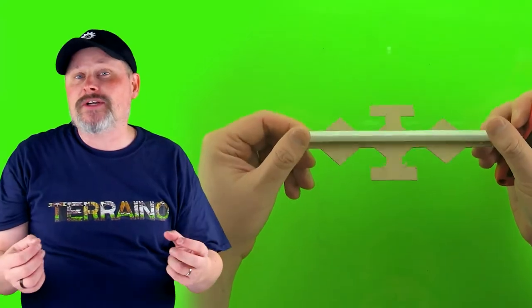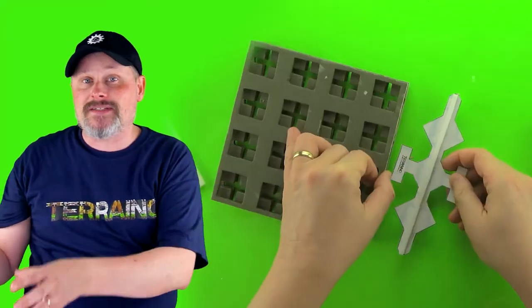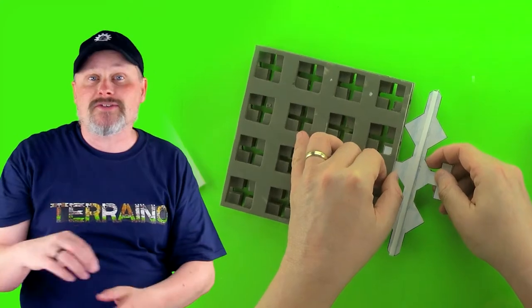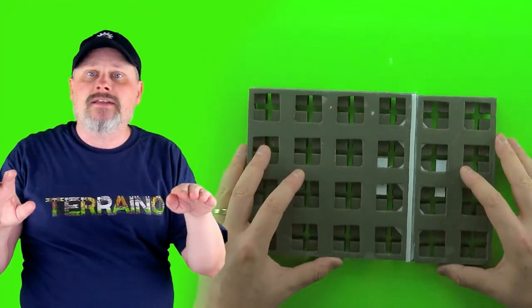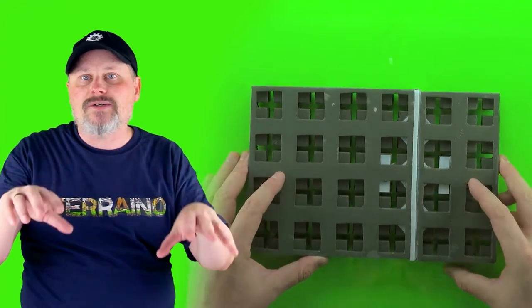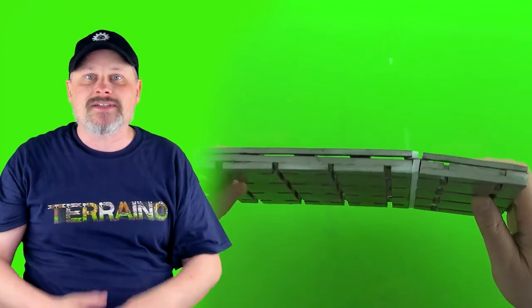Well, if you haven't guessed already, grid square connectors are to grid square bases what wall connectors are to walls. They slide in under that first layer in the grid square bases and are held in place by grid square plugs. So let's get started.